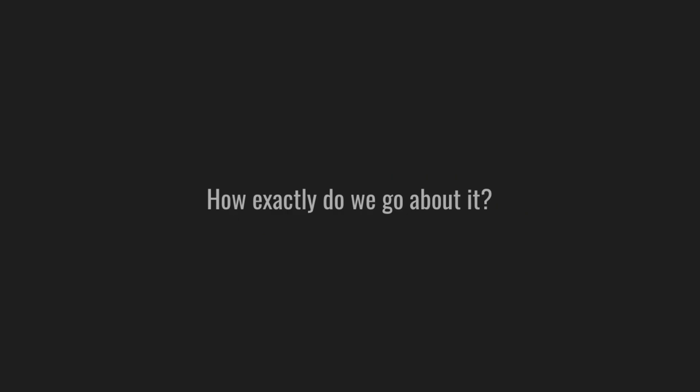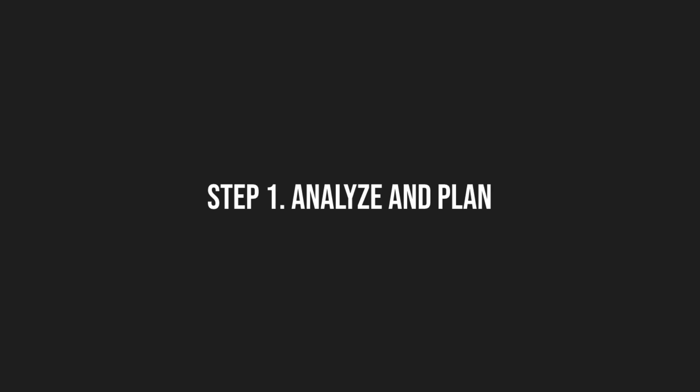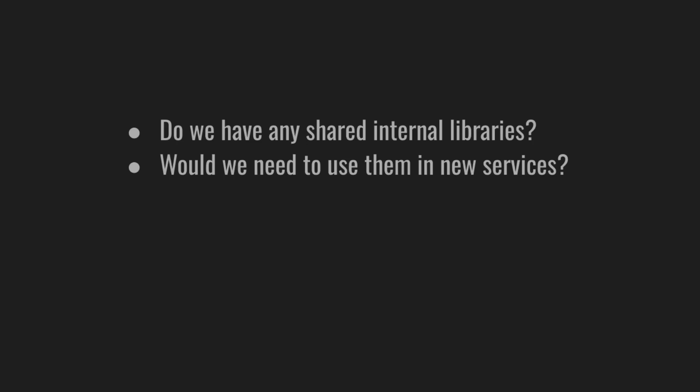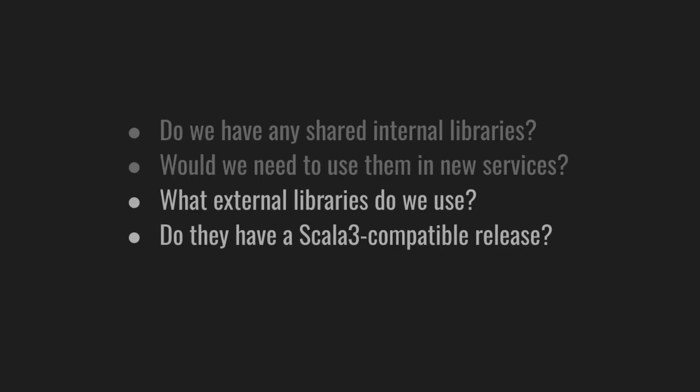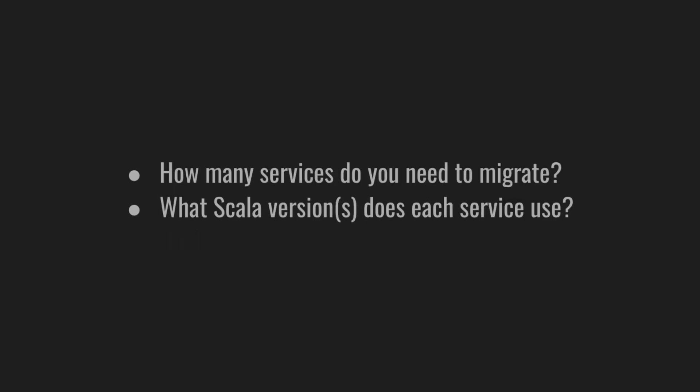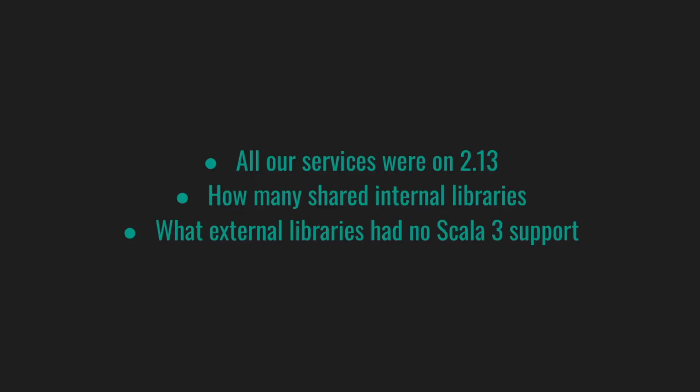Okay, we've defined what migration means, but how exactly do we go about it? Even if we decide not to touch the existing services, we need to review our codebase. Do we have any shared internal libraries? Would we need to use them in a new service? What external libraries do we use, and do they have a Scala 3 compatible release already? You might also need to consider how many services to migrate and what Scala versions each service uses. Thanks to the interop between Scala 3 and Scala 2.13, it might be more accessible or crucial to upgrade to Scala 2.13 first.